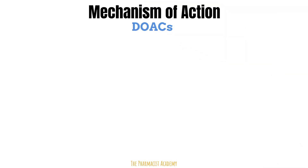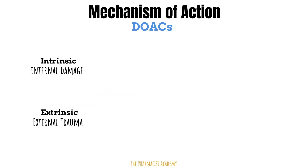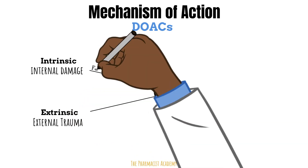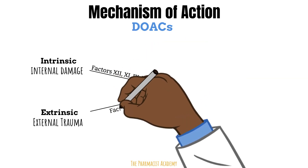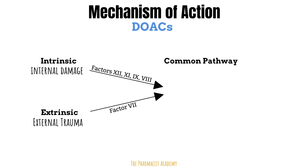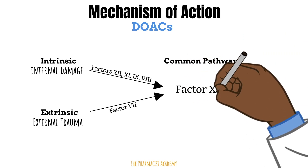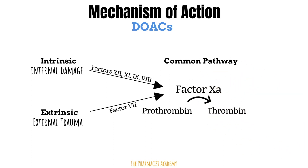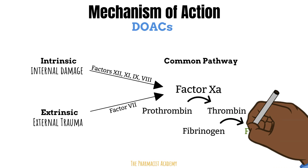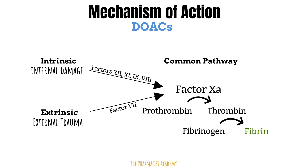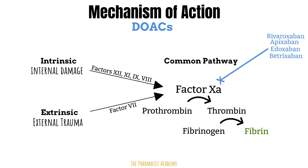Now, the DOACs. The clotting cascade occurs through two separate pathways: the intrinsic and the extrinsic pathway. The intrinsic pathway is activated by internal damage to the vessel wall, and the extrinsic is activated by external trauma. After activation, these pathways interact with different clotting factors but unite downstream to form the common pathway, which starts with Factor 10a. Factor 10a converts prothrombin into thrombin, and thrombin converts fibrinogen into fibrin, which holds the platelet plug together.